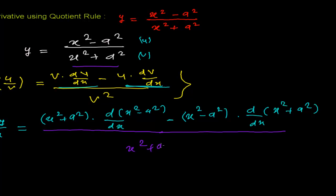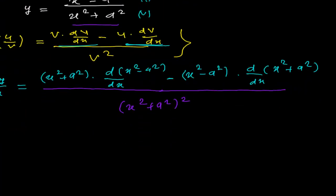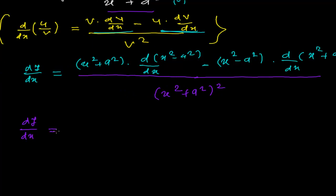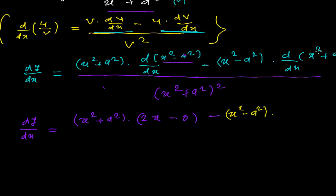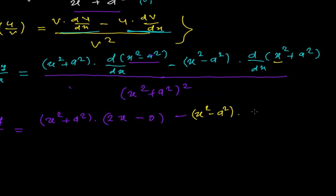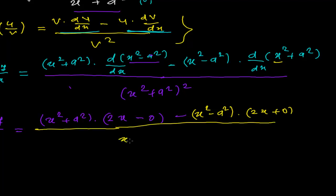So dy over dx equals: x squared plus a squared, times the derivative of x squared minus a squared. The derivative of x squared is 2x and the derivative of a squared is zero since a is a constant. Then minus x squared minus a squared, times the derivative of x squared plus a squared, which gives 2x plus zero. All divided by (x squared plus a squared) squared.